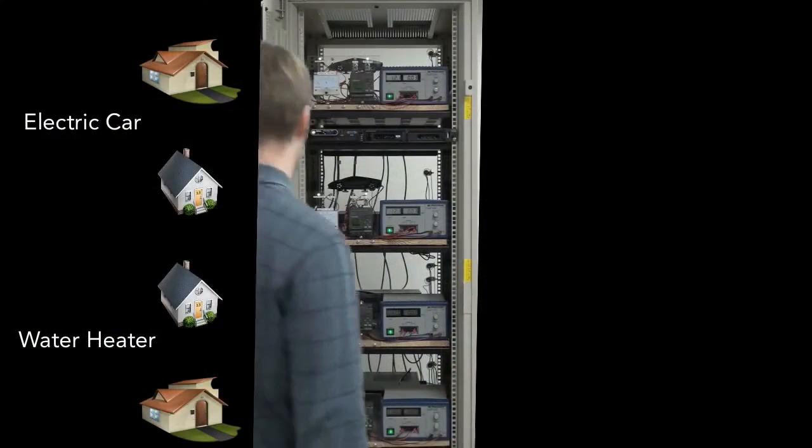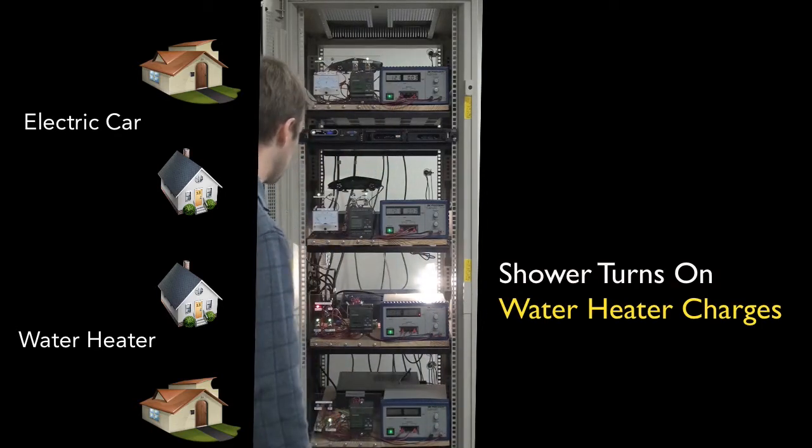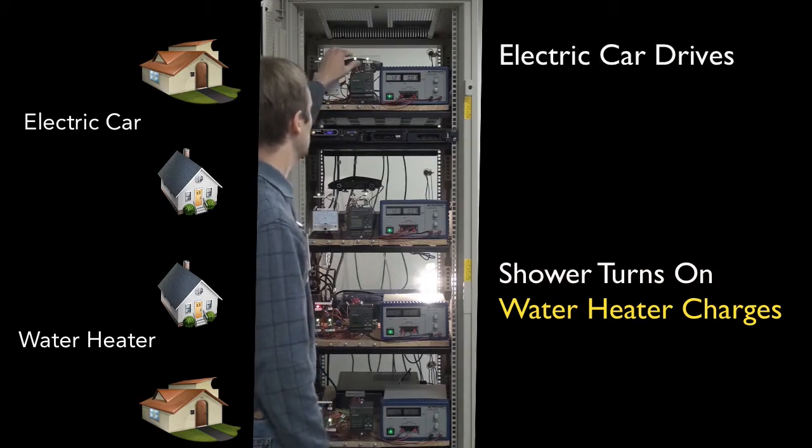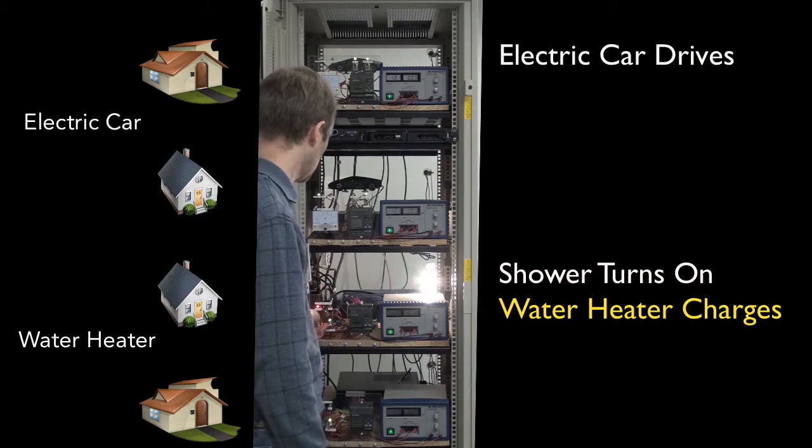In this example, someone in House 3 wakes up and takes a shower. The agent for its water heater then publishes its desired energy and priority and examines its knowledge of other agents' needs. Since it is the only agent with an energy need, the water heater begins charging.